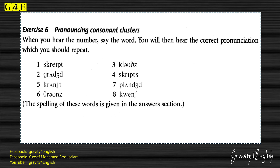Exercise 6: Pronouncing consonant clusters. When you hear the number, say the word. You will then hear the correct pronunciation, which you should repeat. One — Scraped. Two — Grudged. Three — Clothes. Four — Scripts. Five — Crunched. Six — Throne. Seven — Plunged. Eight — Quench. The spelling of these words is given in the answers section.